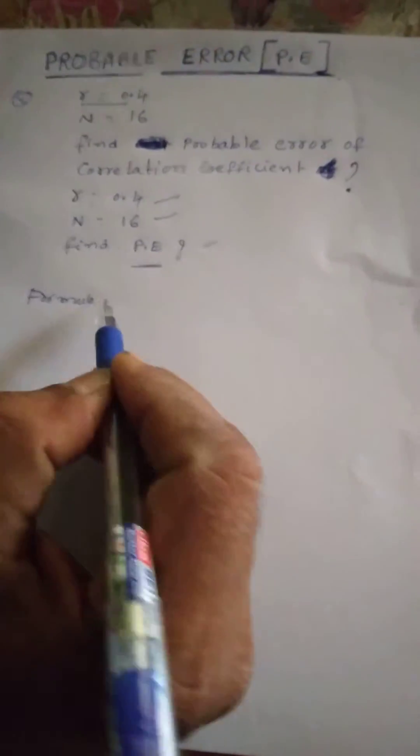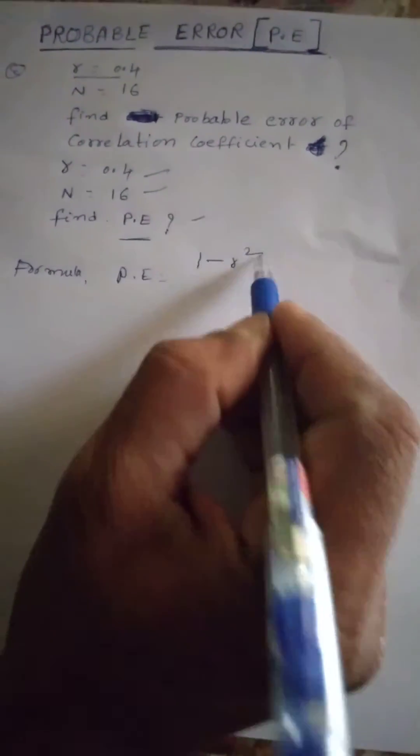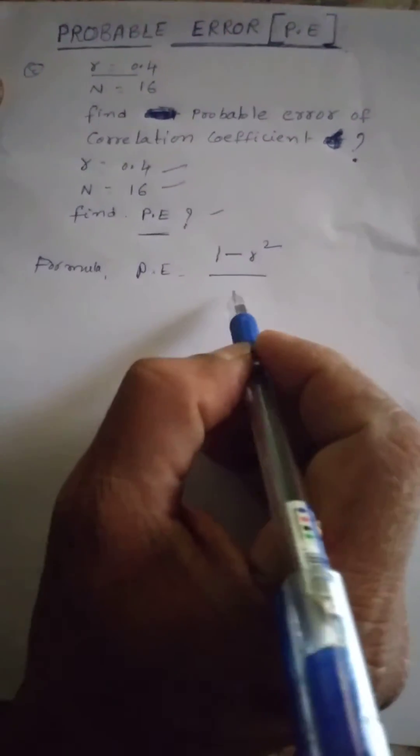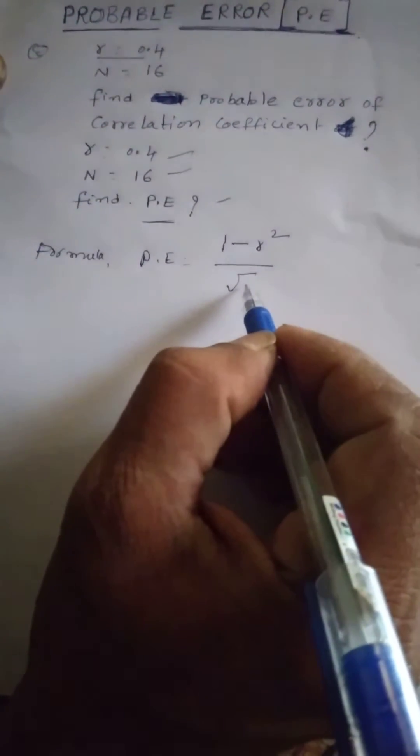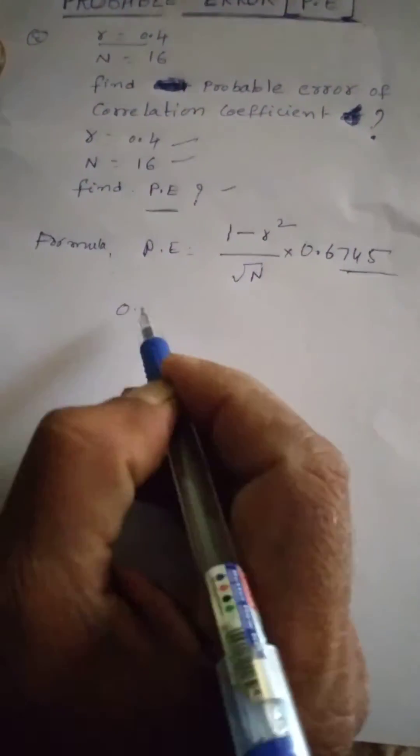This is the data. The formula: P equal to 1 minus R squared by root n into 0.6745. This is constant. 0.6745 equal to constant.